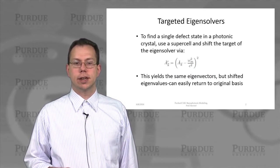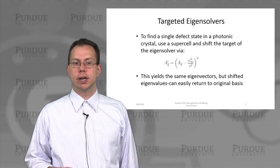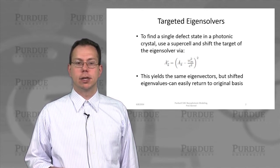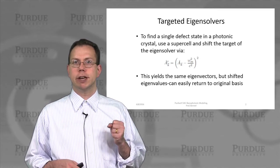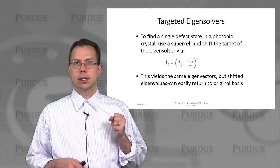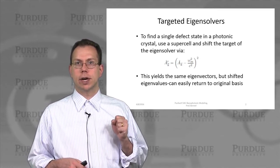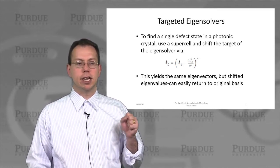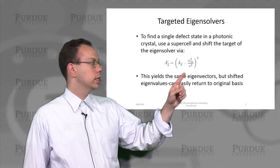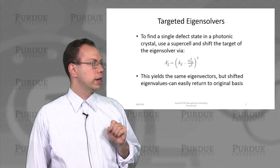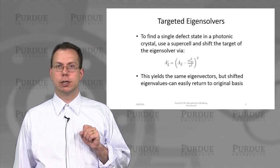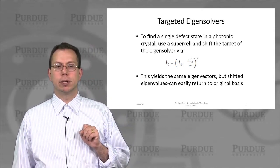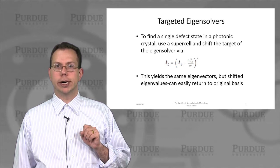So what is the difference between a targeted and regular eigensolver? Basically, what we do is we shift the Maxwell eigenoperator by a finite amount, which is shown in this equation. So we actually subtract a value of omega m squared over c squared from that operator, and then we square it.